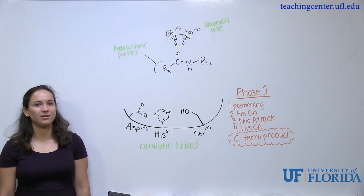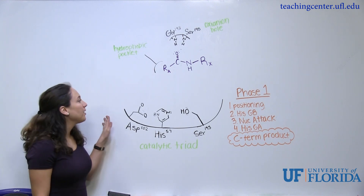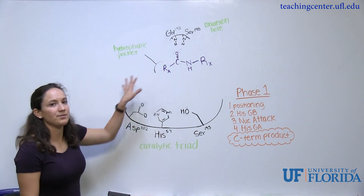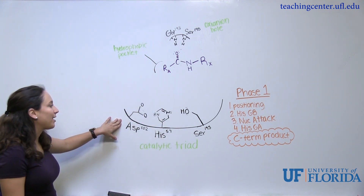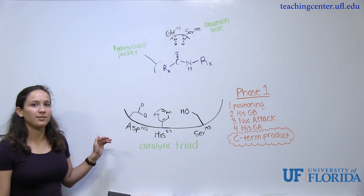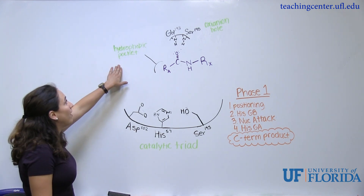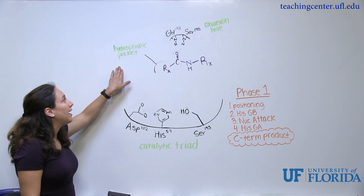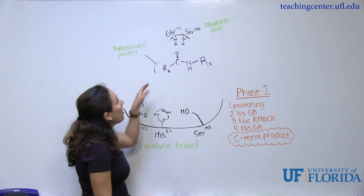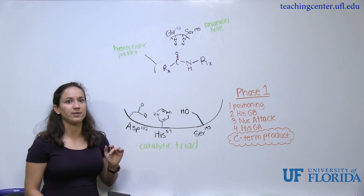Now that we know the function of chymotrypsin, we're going to look at the actual mechanism. Let me orient you to the model I've drawn. All of this is the active site. At the bottom you have the catalytic triad, which includes aspartate, histidine, and serine — these amino acids are going to do the majority of the heavy lifting in this reaction. You also have the hydrophobic pocket, where the aromatic residue will rest, and the oxyanion hole, which includes glycine and serine. We'll get to what the oxyanion hole does in a bit.